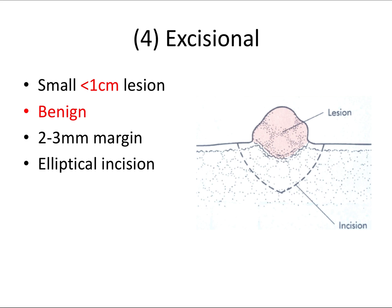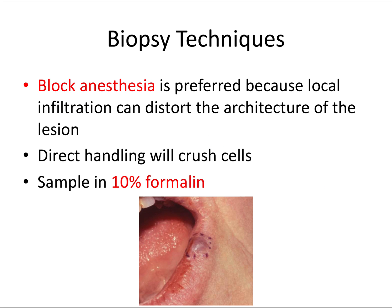Finally, we have the excisional biopsy. These are used for smaller lesions, generally less than one centimeter in diameter, where we suspect they are benign. We can also use the excisional biopsy on small, vascular, and pigmented lesions. It entails the removal of the entire lesion and a perimeter of surrounding uninvolved tissue, which we call the margin — ideally about two to three millimeters of uninvolved normal tissue. An elliptical incision is best because it is easier to close after the biopsy has been completed.